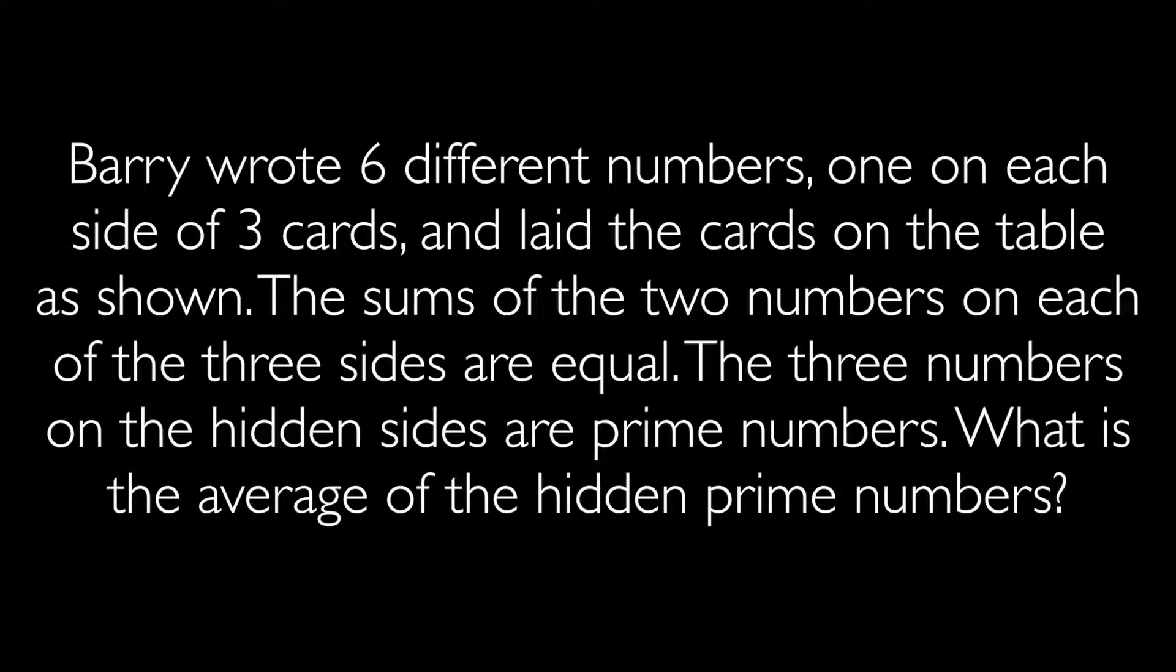Today we're going to work on a TJ Prep math problem taken from the AMC 2006 exam. Barry wrote six different numbers, one on each side of three cards, and laid the cards on the table as shown. We'll see that on the board. The sums of the two numbers on each of the three cards are equal. The three numbers on the hidden sides are prime numbers. What is the average of the hidden prime numbers?